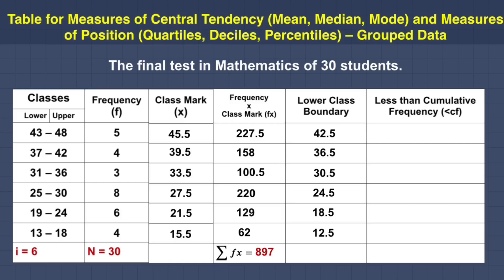Next, let's get the less than cumulative frequency. First, copy the number at the bottom of the first frequency — that is 4. Then get the sum of the frequency in each row: 4 plus 6 equals 10; add the next frequency of 8: 10 plus 8 equals 18; add 3: 18 plus 3 equals 21; add 4: 21 plus 4 equals 25; add the last frequency of 5: 25 plus 5 equals 30. Take note — the last number must be equal to n, which is 30.